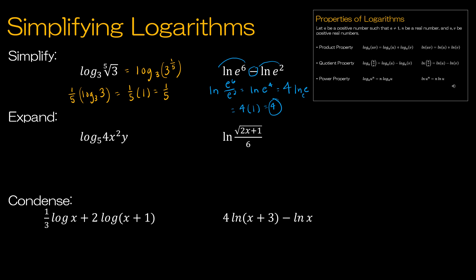Next question — let's expand log base 5. There's more than one correct answer. For instance, the 4 could be rewritten as 2 squared, so I could have either log base 5 of 4 or 2 times log base 5 of 2. I'll leave it as log base 5 of 4 because that makes the most sense here. Then I put a plus sign. My next value is x squared — I'll use the power property to move the exponent to the front, giving 2 times log base 5 of x. Then plus log base 5 of y. That is the correct solution.